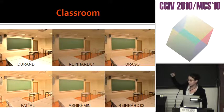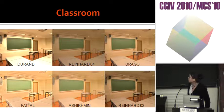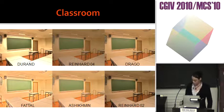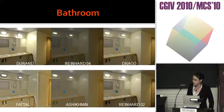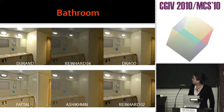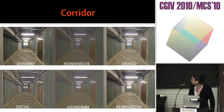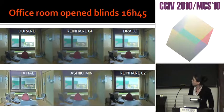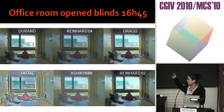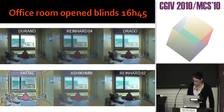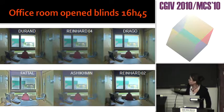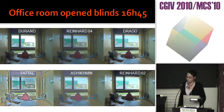As you can see here, the scenes judged during the test: the classroom — Durand, Reinhard 4, Drago, Fattal, Ashkhmin, and Reinhard 2 — the bathroom, the corridor, the office room with open blinds (only lit with artificial lighting), and the same room with closed blinds, also only lit with artificial lighting.